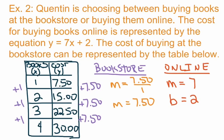Each book at the bookstore costs $7.50. If you buy online, each book is only $7 but you have to pay a $2 fee — possibly a shipping and handling or membership fee. No matter how many books you buy online, you still pay that $2 fee. We still need to figure out the y-intercept for the bookstore table.